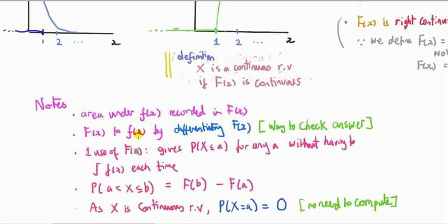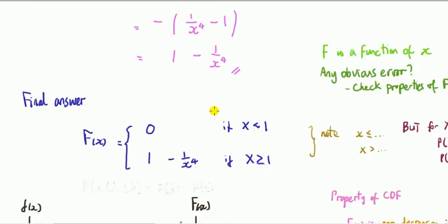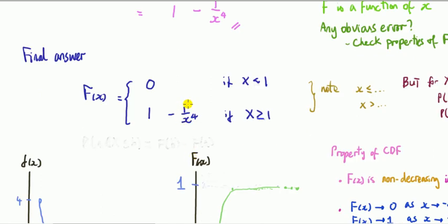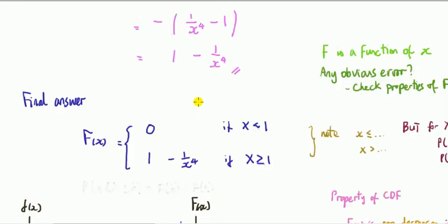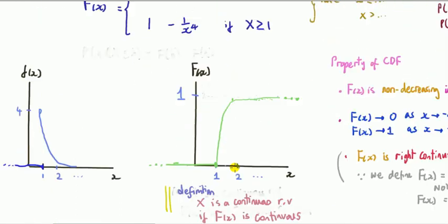An important point: you can go from the CDF back to the PDF by differentiating. Differentiating one minus x to the minus four: bring minus four down, minus four times minus one is plus four, and then subtract one from the power to get minus five, giving four over x to the fifth. The derivative of the constant one is zero. This gives back the original PDF — confirming the answer is correct.